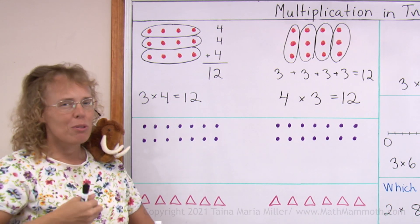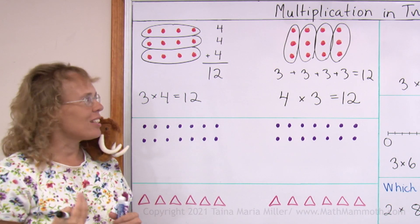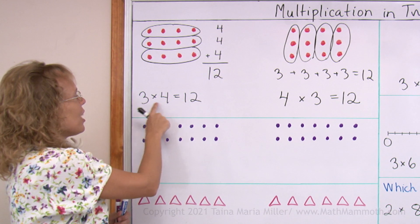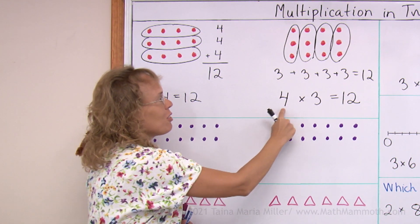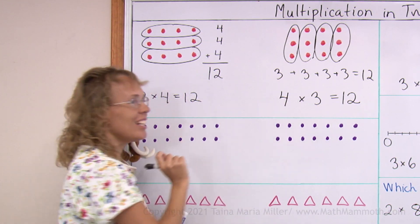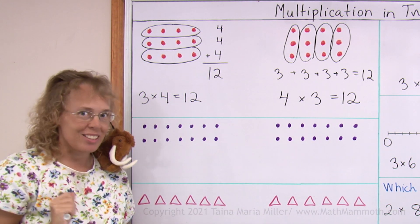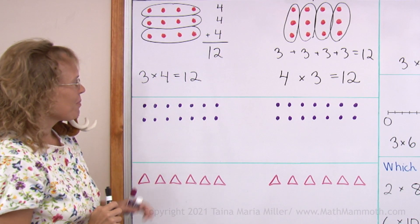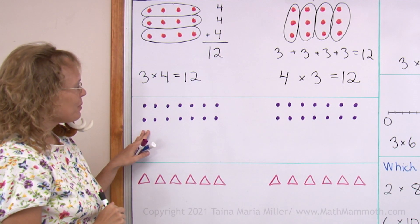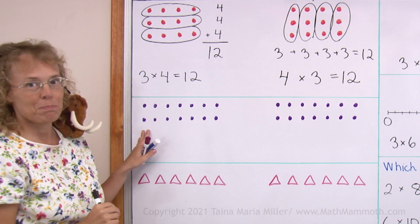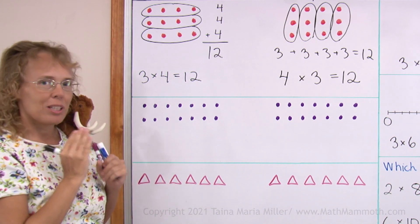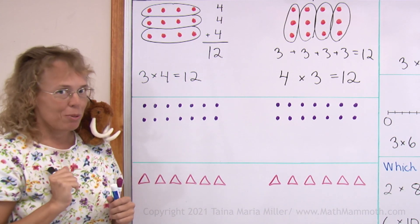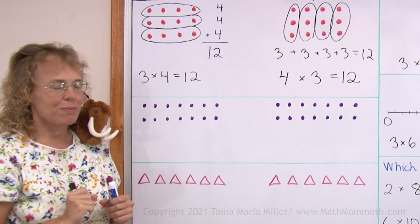So what I want to illustrate with this is that in a multiplication, three times four or four times three has the same answer. Let's look at it again. Here I have again some plums. We are going to divide them into groups in two different ways and write two multiplications.